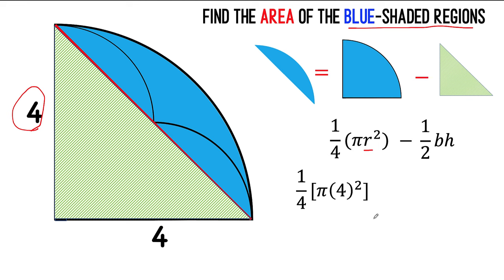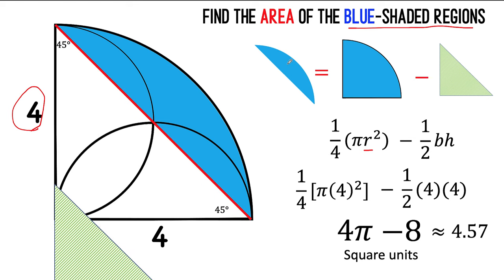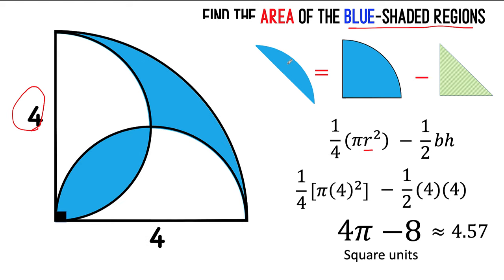The height is also four units, so we have one-half, four times four. Then four squared is 16, divided by four is four, times pi, we have four pi. One-half of four is two times four is eight. So, four pi minus eight square units is now the area of the blue shaded region that we would like to find.